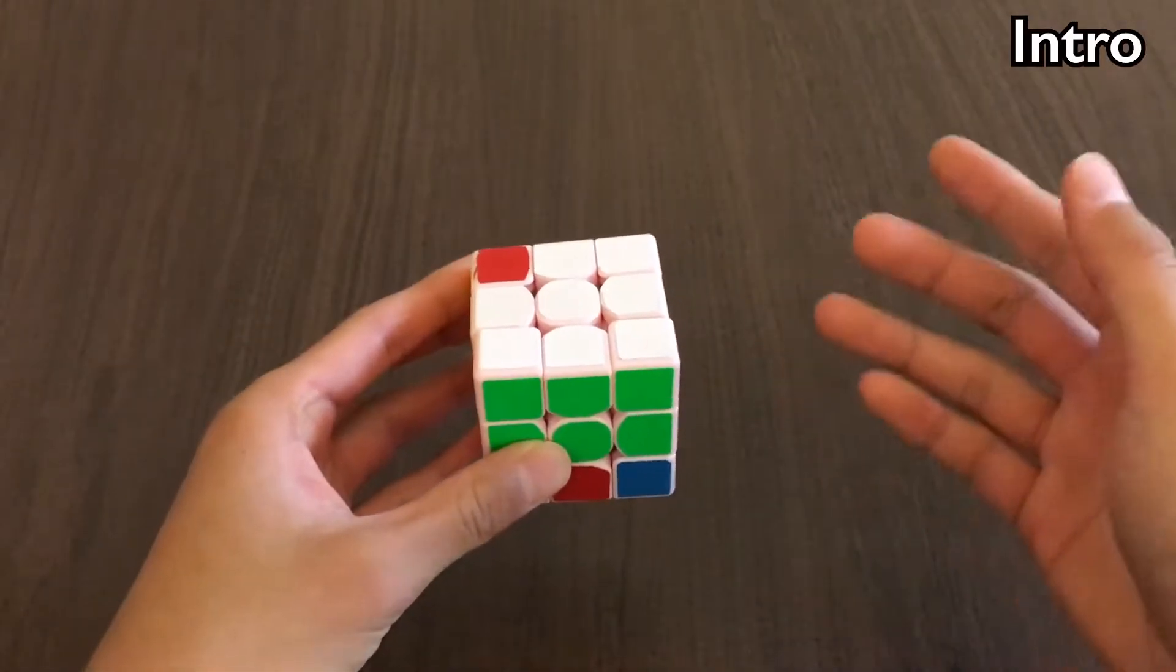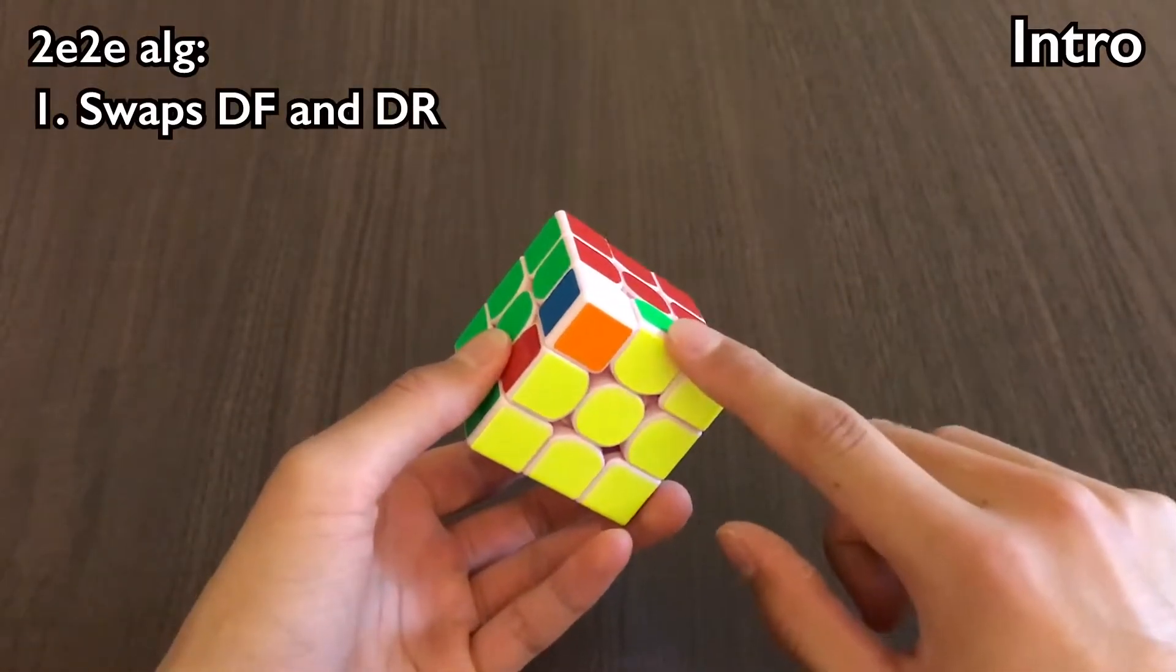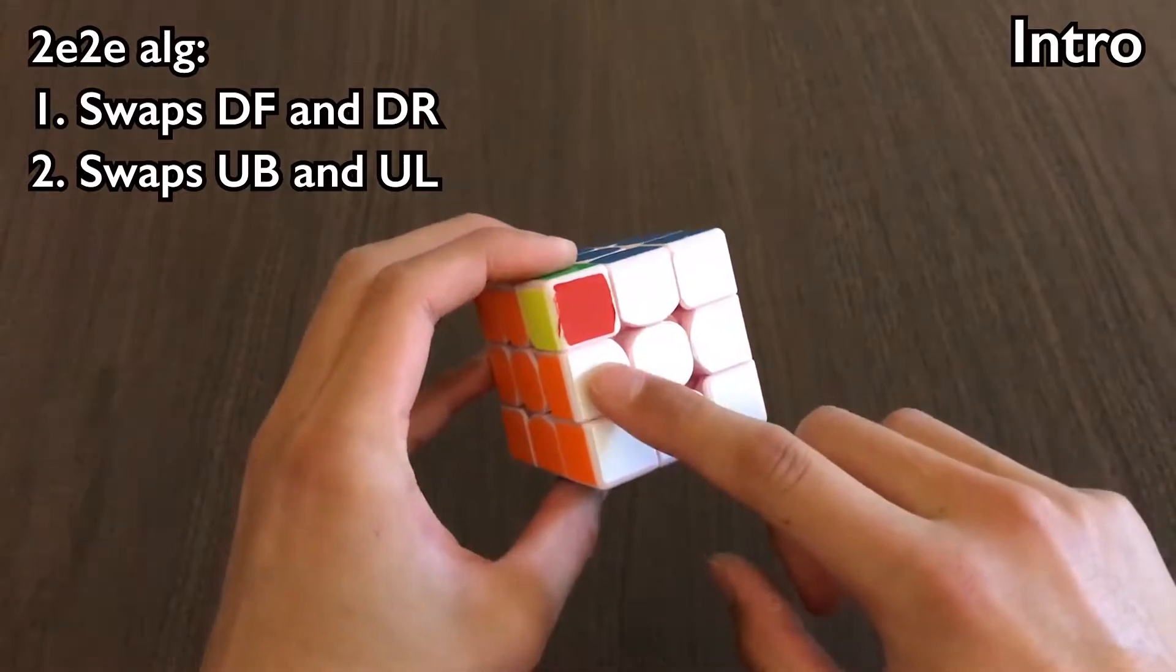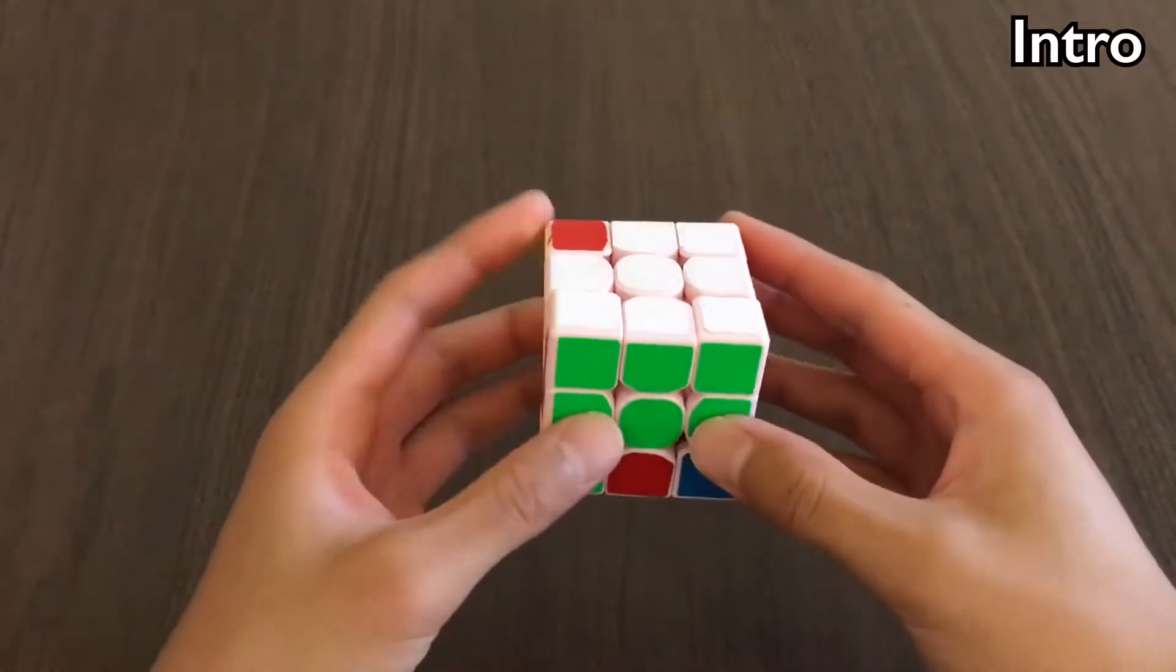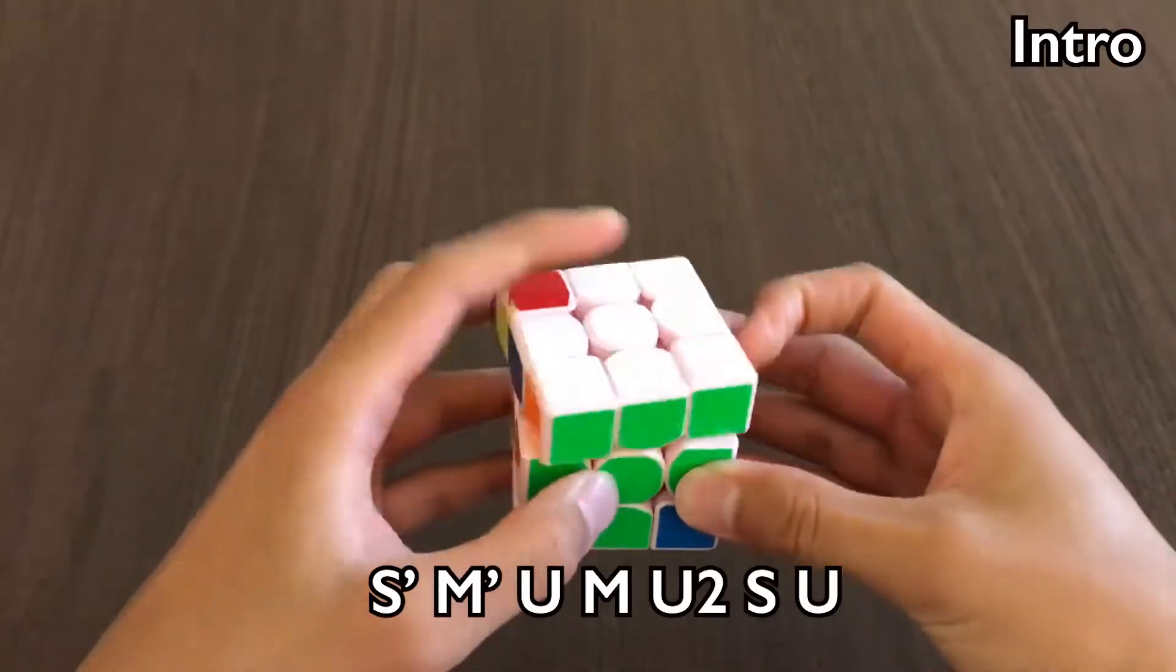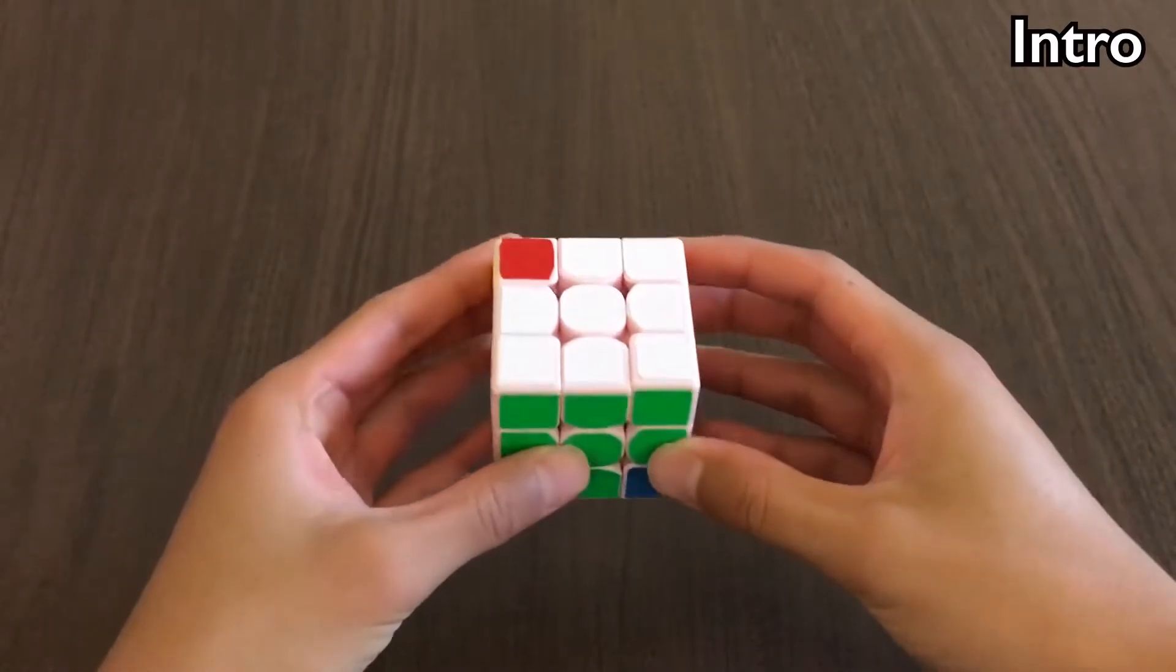The reason we can do this in one step is because the 2E2E alg swaps DF and DR, which solves the last edge, and also swaps UB and UL, which sets us up to do the first corner with old Pacman. So here we have the 2E2E alg. As you can see, the last edge was solved, and UB and UL are now swapped. Now for the corner.